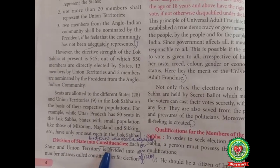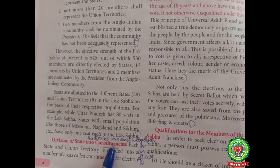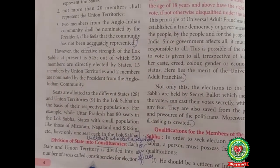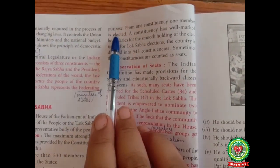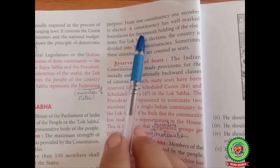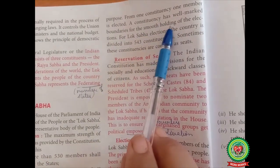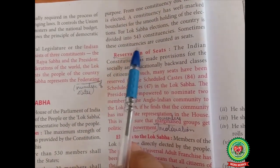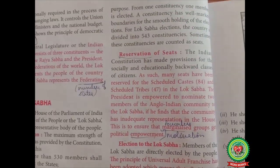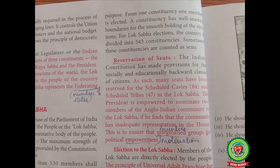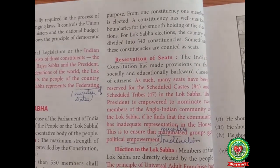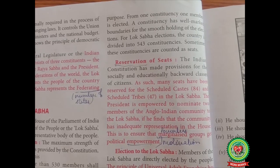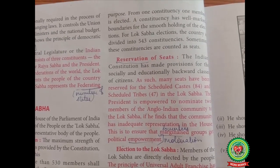Division of state into constituencies. Constituencies means the district who elects a legislator or an officer. Each state and union territory is divided into a number of areas called constituencies for election purposes. From one constituency, one member is elected. A constituency has well-marked boundaries for smooth holding of elections. For Lok Sabha elections, the country is divided into 543 constituencies. At present, Punjab has 13 seats in Lok Sabha.